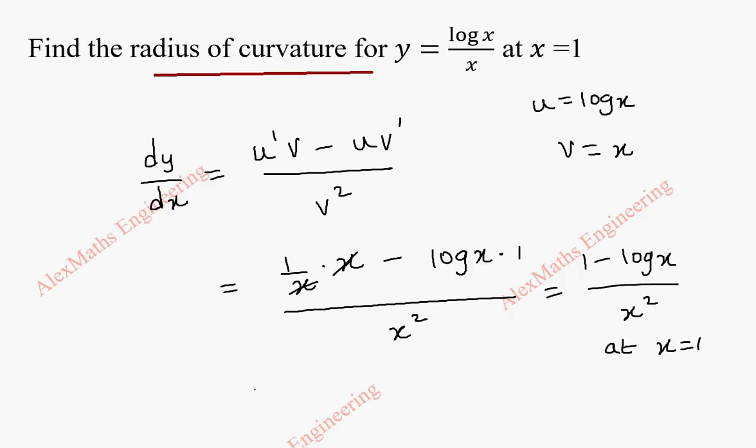So when we substitute 1, we get dy by dx as 1 minus log 1 by x square. Log 1 is 0. And even the denominator, we can substitute x as 1, 1 square is 1. So 1 minus 0 by 1, totally this is 1.